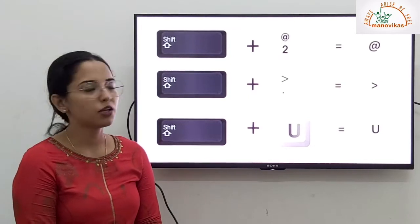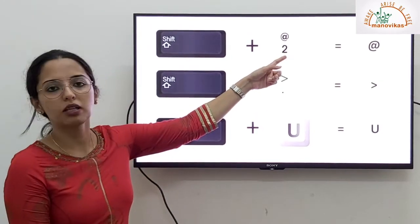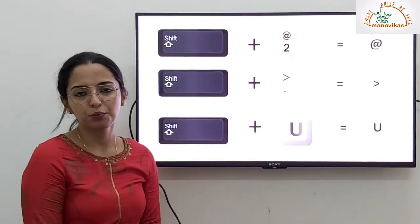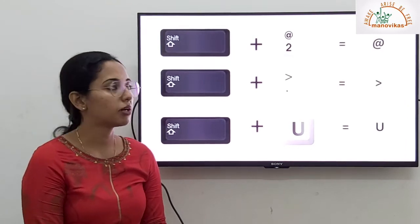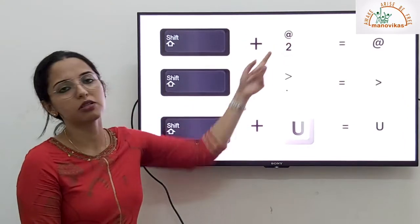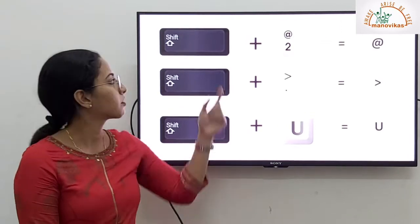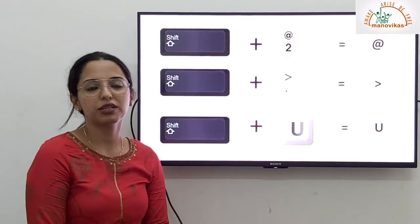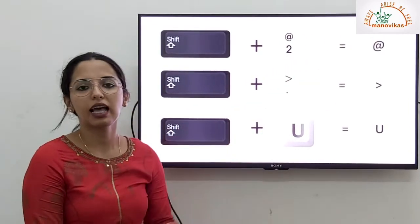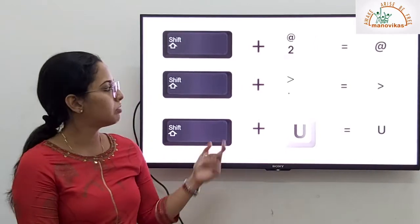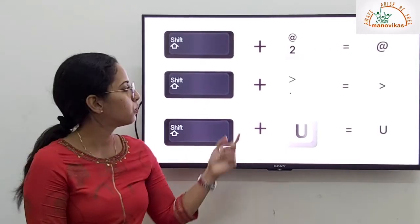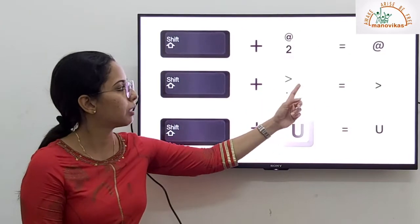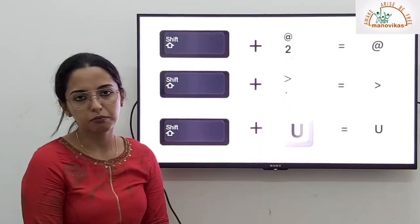For example, you have a symbol on top of number 2. So if I only press 2, I will get number 2. But if I want this symbol to be printed, what shall I do? I will press shift and 2 key together. This will help me get the at symbol. Similarly, if you want greater than sign, you need to press shift and the full stop key. This will help you get the upper symbol of the key.